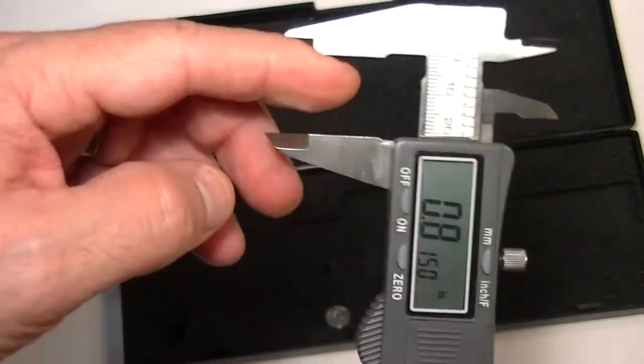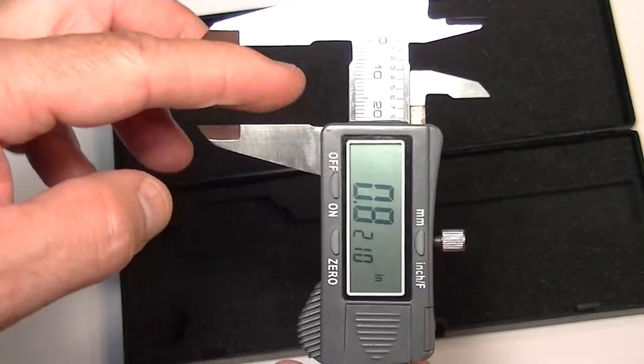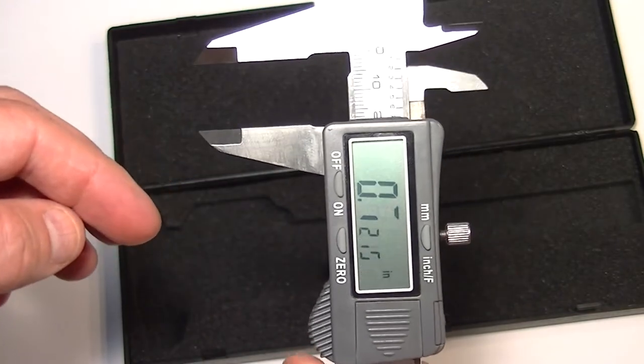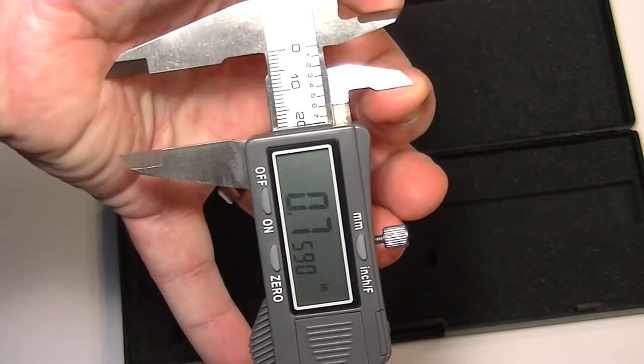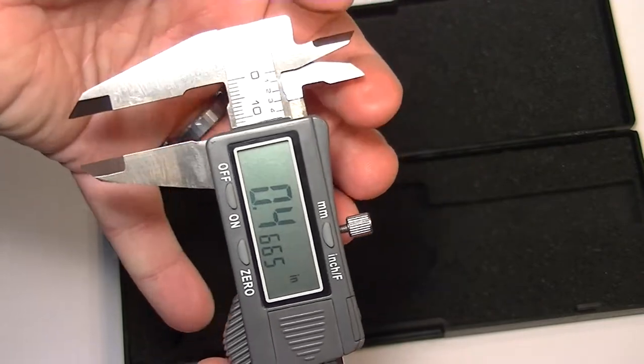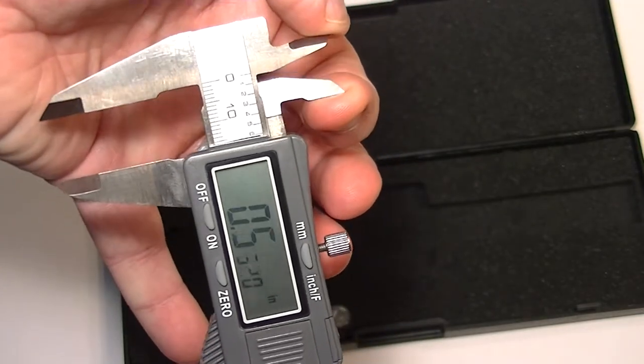You can measure with the jaws right here. That's for the outside diameter or measurement or anything. You have an inside. This is for the inside. If you're measuring like the inside of a pipe, this will measure that.